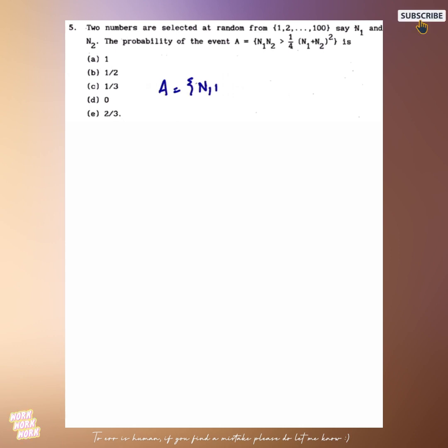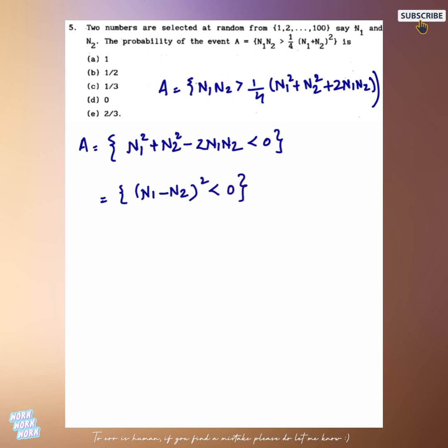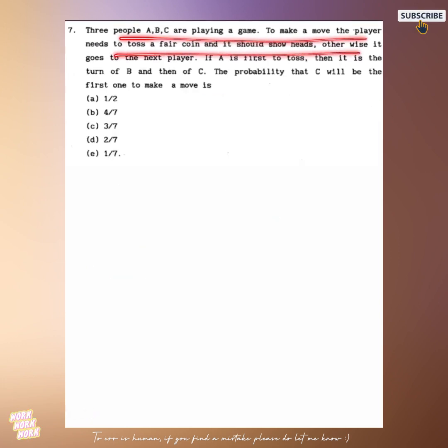Two numbers are selected at random from 1 to 100, and the probability of an event n1 n2 greater than 1 by 4 n1 plus n2 square is. Now let's define A as this. To simplify I can write A is equal to n1 square plus n2 square minus 2 n1 n2 less than 0. Hence we get n1 minus n2 square less than 0. Here n1 can be less than n2 or n1 can be greater than n2, so this incorporates all the cases. So probability of A is equal to 1.